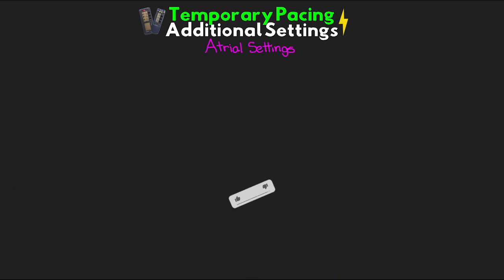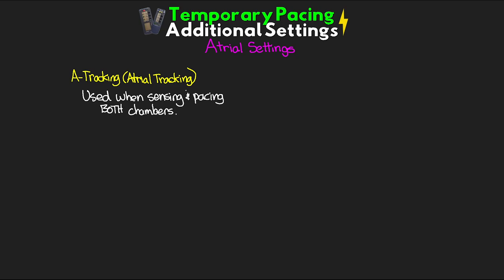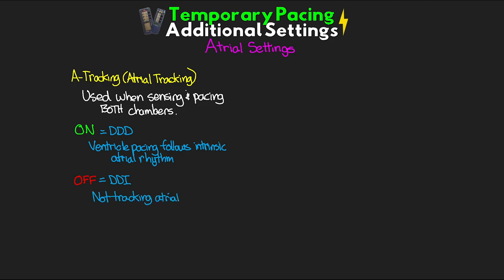Let's talk about a couple of atrial settings. The first is A-tracking, short for atrial tracking, which is only used when sensing and pacing in both chambers. When this setting is on, you're in DDD mode — ventricular pacing tracks the atrial intrinsic rate, a sensed atrial beat inhibits atrial pacing and triggers the AV interval, and if we reach the end of that interval we deliver a paced ventricular beat. If we turn A-tracking off from DDD, this flips us into DDI mode — we inhibit atrial pacing but don't trigger the AV interval, so we're not tracking the atrial rhythm and only pacing the ventricle at the set rate. This is important for patients with atrial arrhythmias such as AFib.